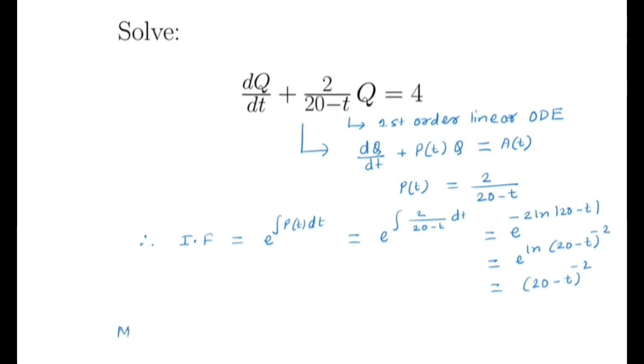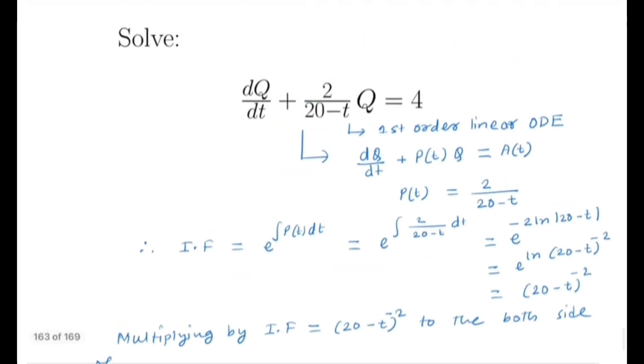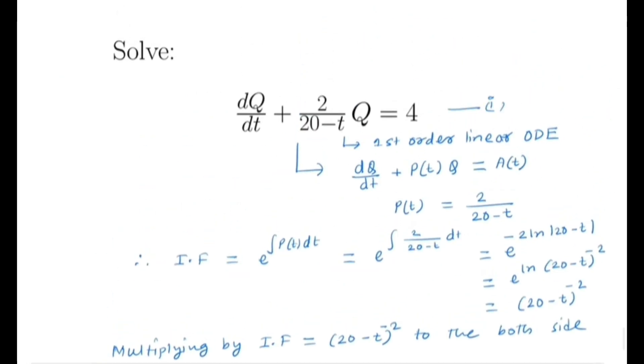So now multiplying by integrating factor (20-t)^(-2) to both sides of this equation number 1...